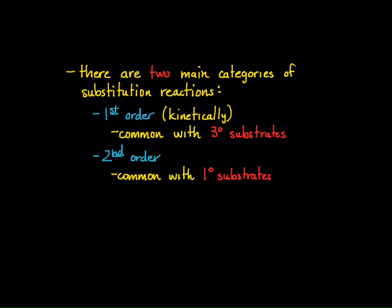If you're thinking about the classification of alkyl halides, we have three main types: a primary alkyl halide, a secondary alkyl halide, and a tertiary alkyl halide. Notice the secondary substrate was not listed for either reaction type, and there's good reason for that — secondary alkyl halides can take either one.